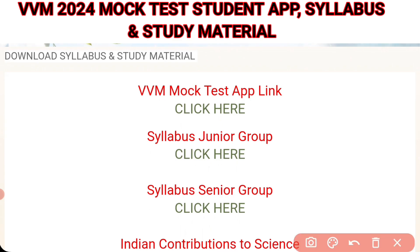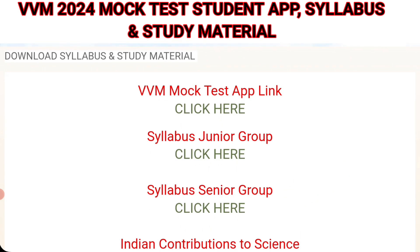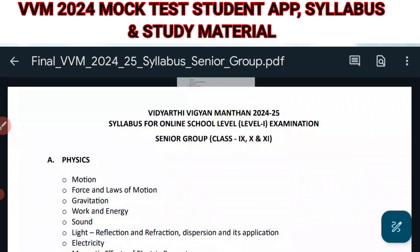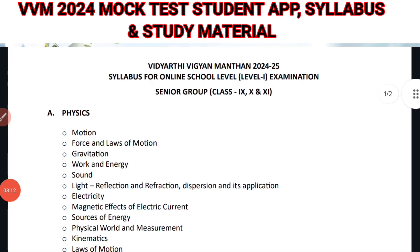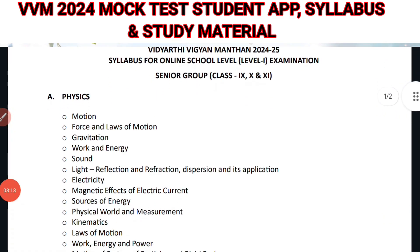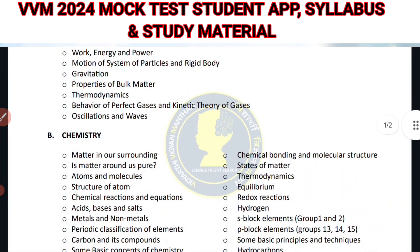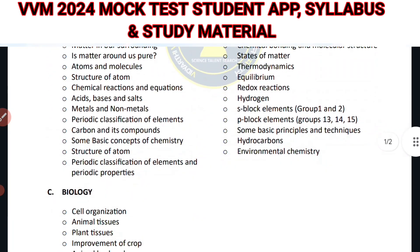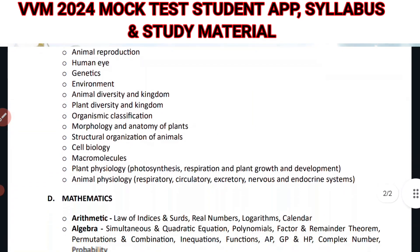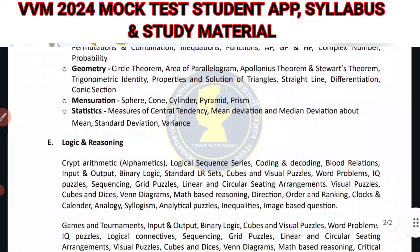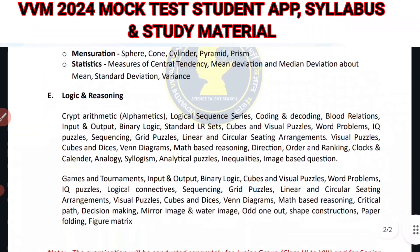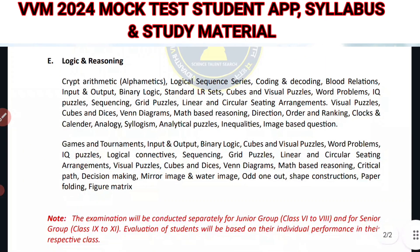Next, we have the syllabus for senior group. After clicking, the syllabus for senior group opens. Here, the first subject is again physics, then chemistry, biology, and mathematics topics. And lastly, we have the logic and reasoning topic.